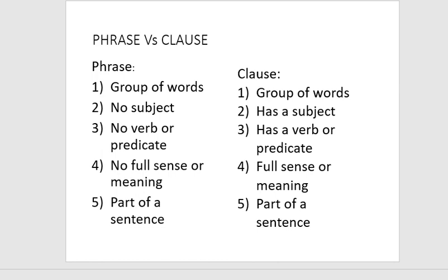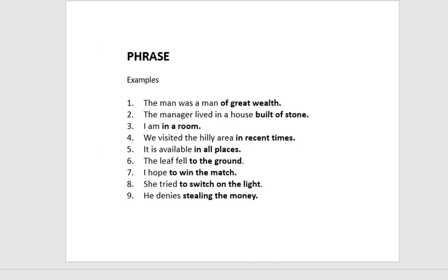Number four: a phrase will not give you any sort of full meaning or sense. In a clause, number four, it gives full sense and meaning — if we separately read that part of the sentence, it will give us full meaning. Number five: both a phrase and a clause are parts of a main sentence.